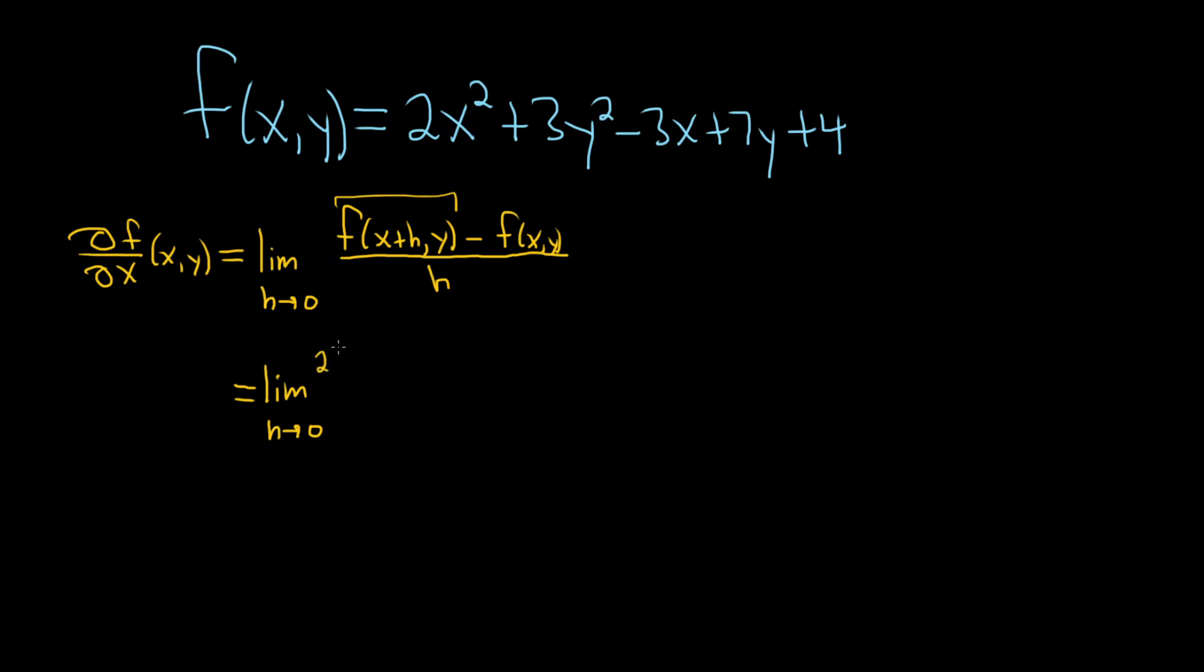So we'll have 2(x plus h) squared plus 3y squared, the y stays the same, minus 3(x plus h). That one changes, and then the y stays the same, plus 7y plus 4. I'm writing kind of small. I didn't realize how much room it would take. So basically, all I did was replace all of the x's with x plus h.